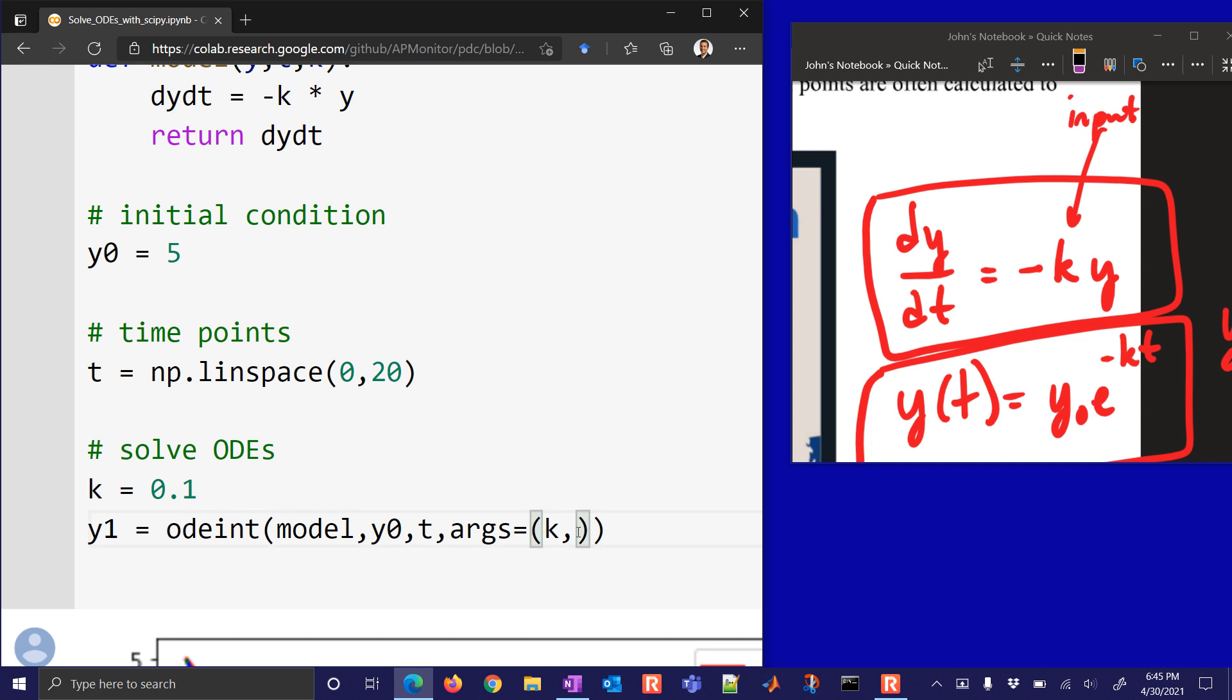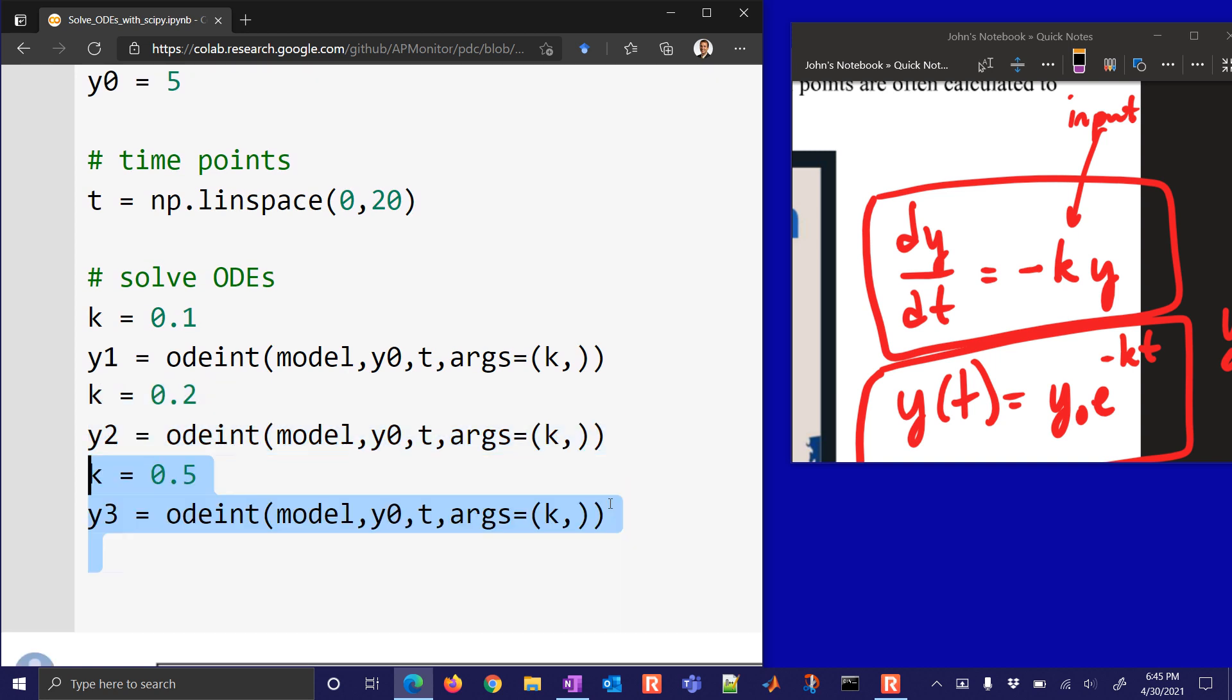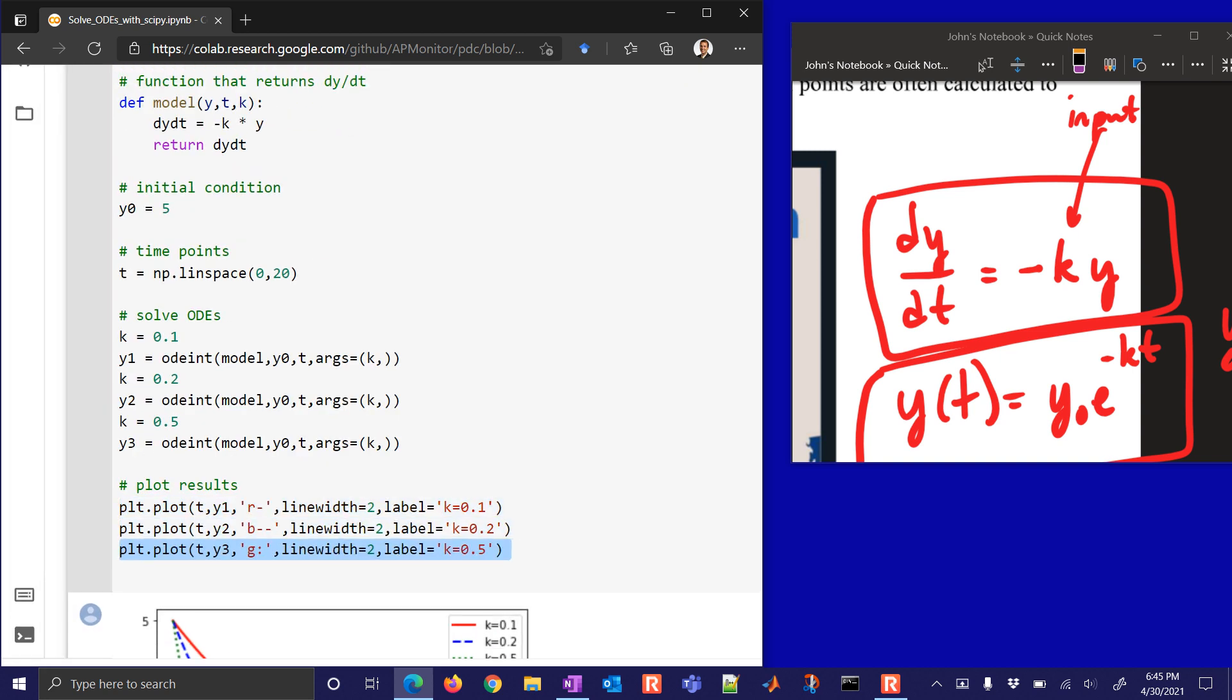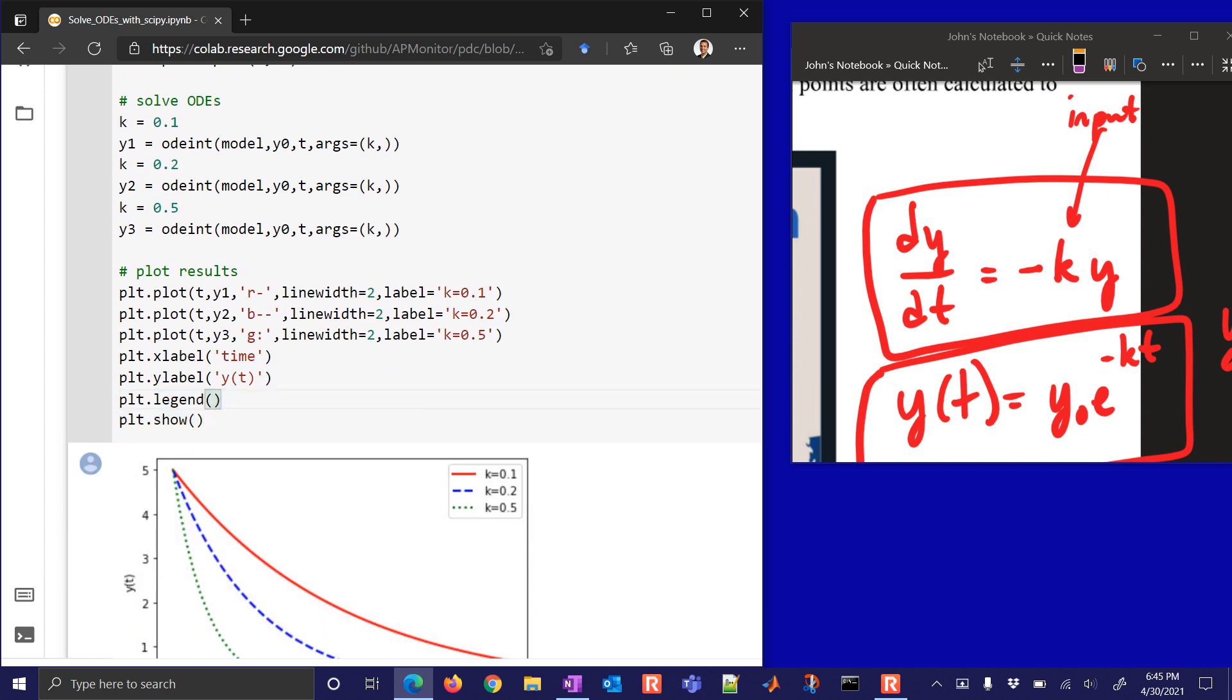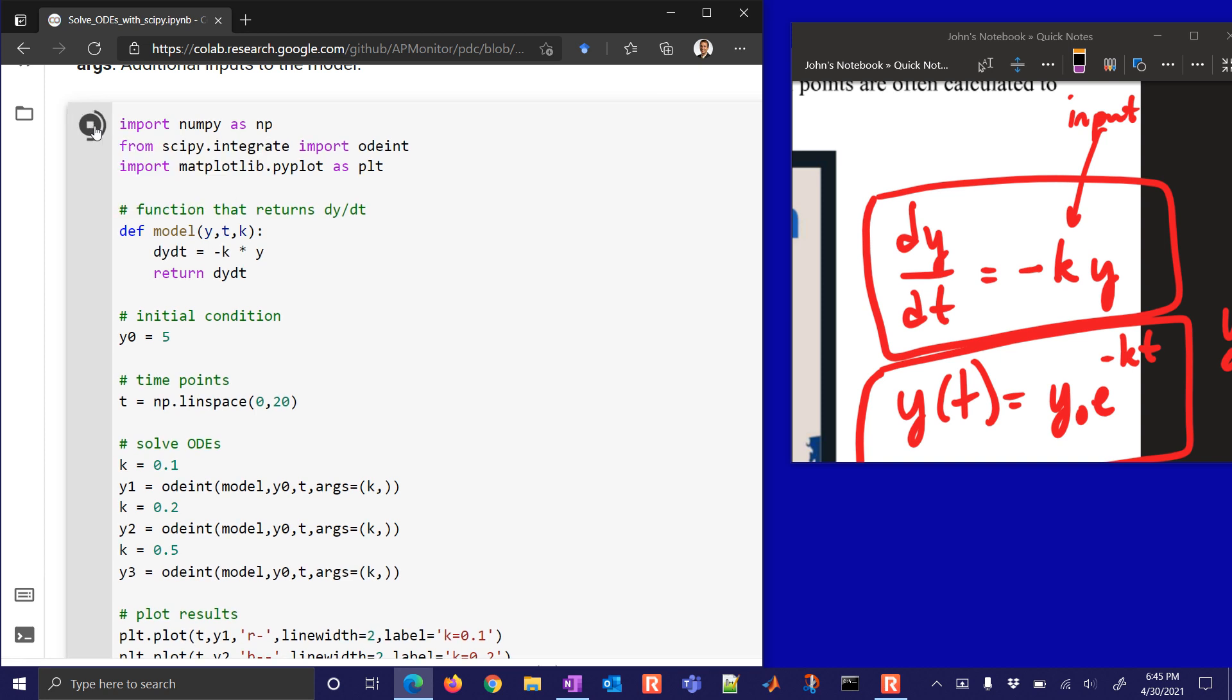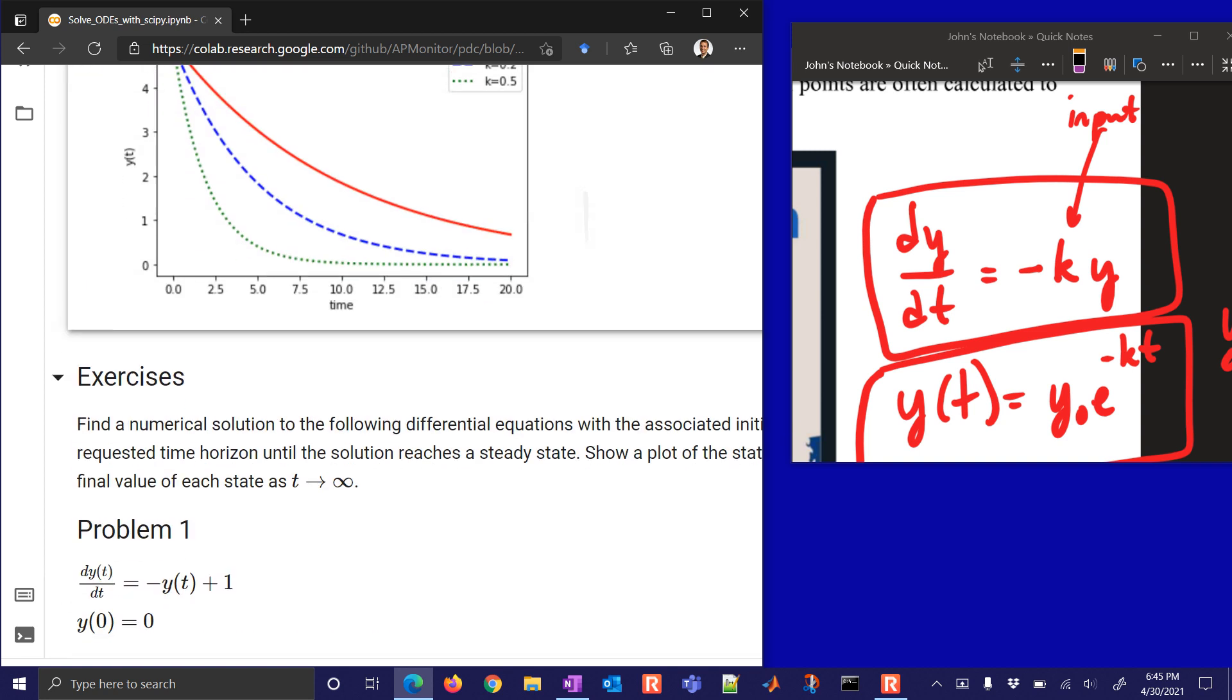This is our only input. Now if you had two, let's say you had k and then z was another one, then you wouldn't have to put a comma after that. Now we can also solve it with k equals 0.2, k equals 0.5. And then we want to plot the results. So let's just go ahead and plot all of these and put them on a single plot. I'm going to run that with Control-Enter, or you can come up here and just hit the Run button on each of these cells. So you can see now we've input with 0.1, 0.2, and 0.5. So the higher the k value, the faster it decays to 0.